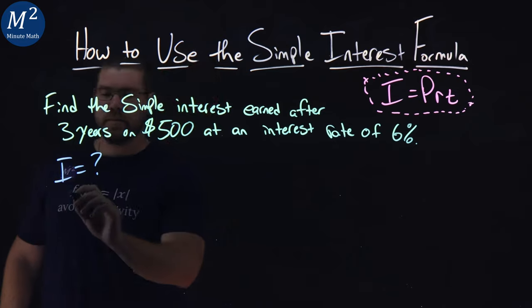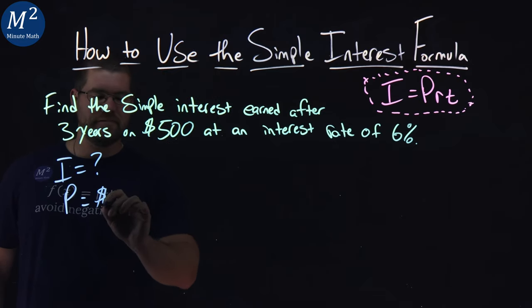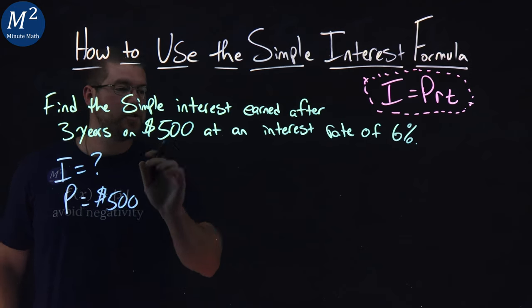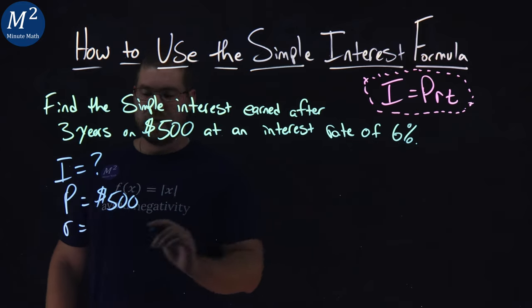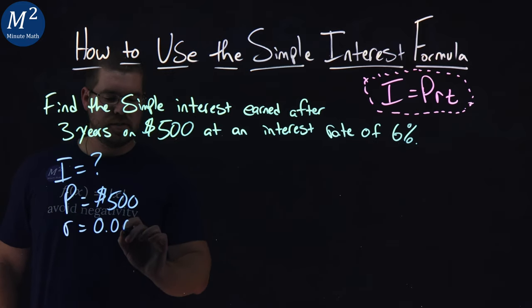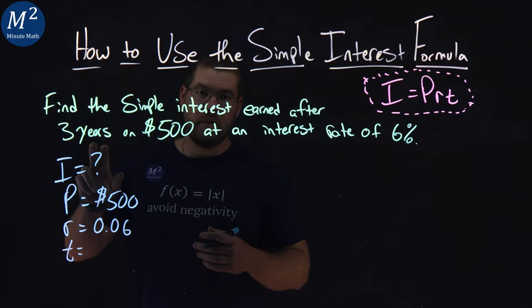But we do have P, the principal, and that's going to be $500. What was our initial amount? Well, our rate, R, is 6% as a decimal, 0.06. And our time is how long we're doing this for, and that's three years.